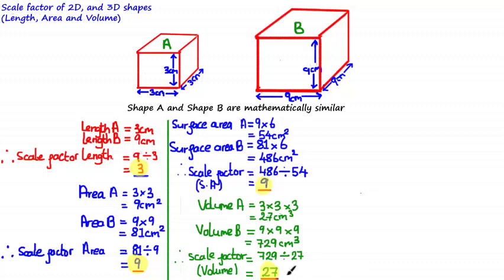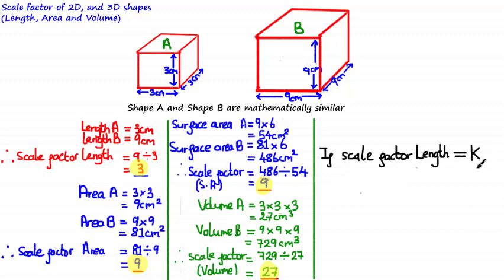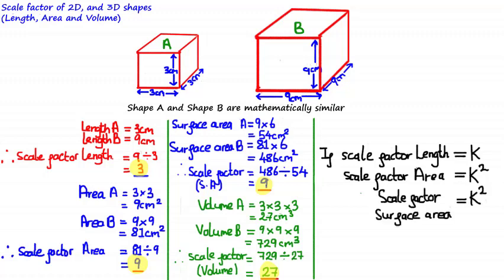Let's compare all the scale factors with the scale factor of length. The scale factor of surface area is 9, which equals 3 squared. The scale factor of volume is 27, which equals 3 cubed. These examples show the general relationship between scale factors. If two similar shapes have a scale factor of length equal to K — where K is any positive value — then the scale factor of area is K², the scale factor of surface area is also K², and the scale factor of volume is K³.